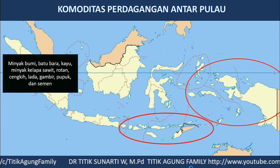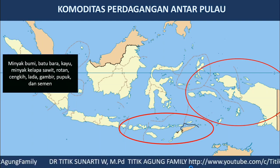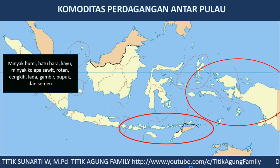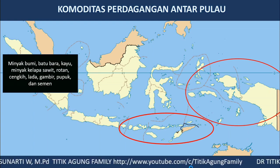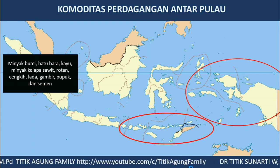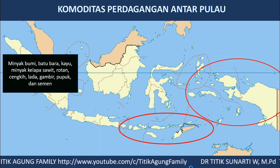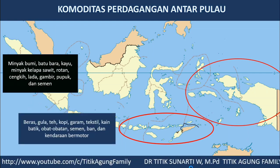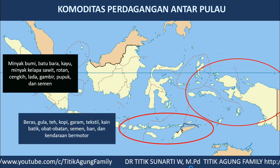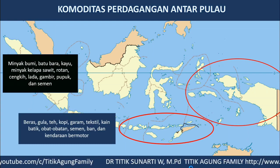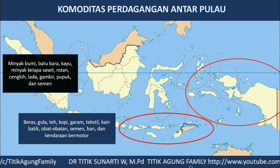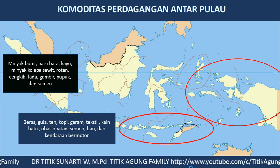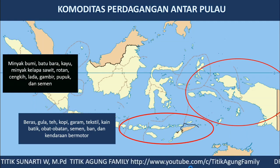Adapun komoditas perdagangan antar pulau antara lain: dari Pulau Sumatera berupa minyak bumi, batu bara, kayu, minyak kelapa sawit, rotan, cengkih, lada, gambir, pupuk, dan semen. Dari Pulau Jawa dan Madura berupa beras, gula, teh, kopi, garam, tekstil, kain batik, obat-obatan, semen.